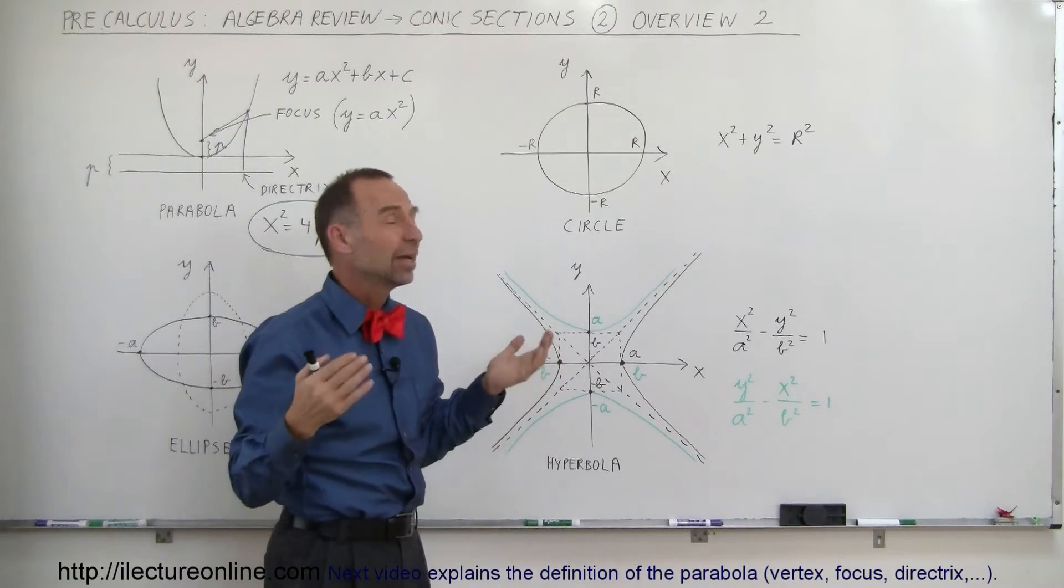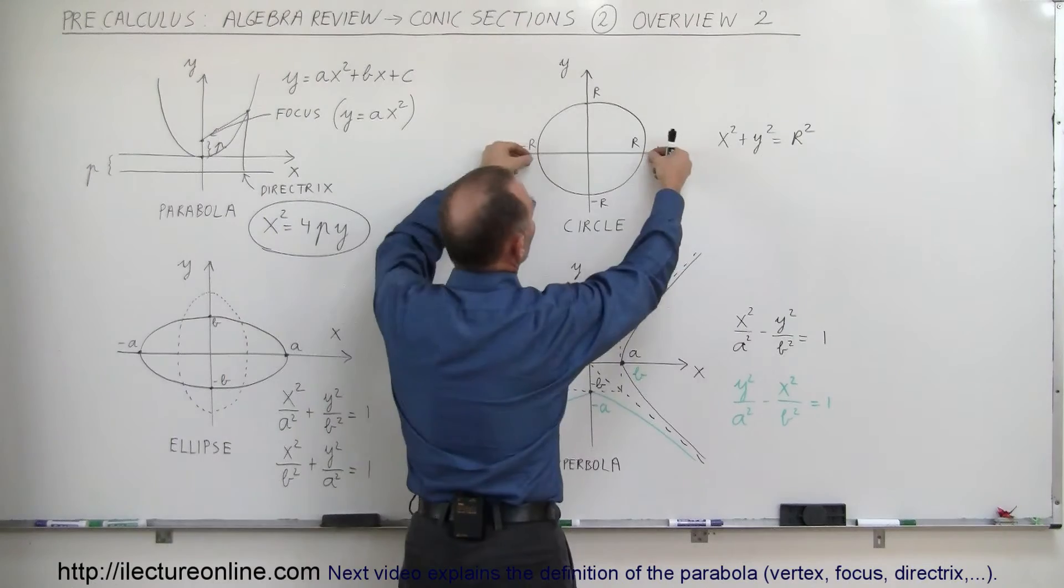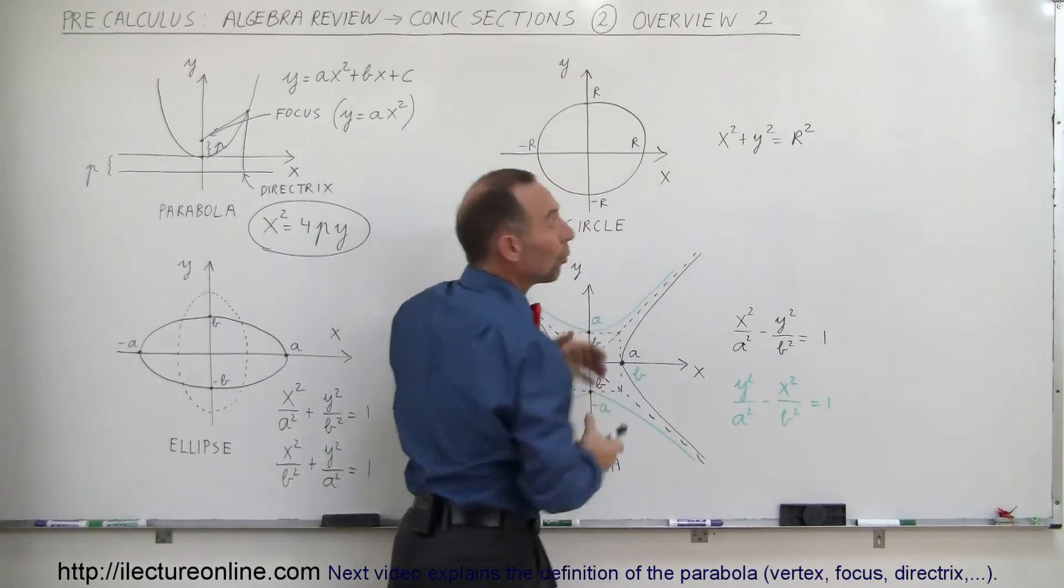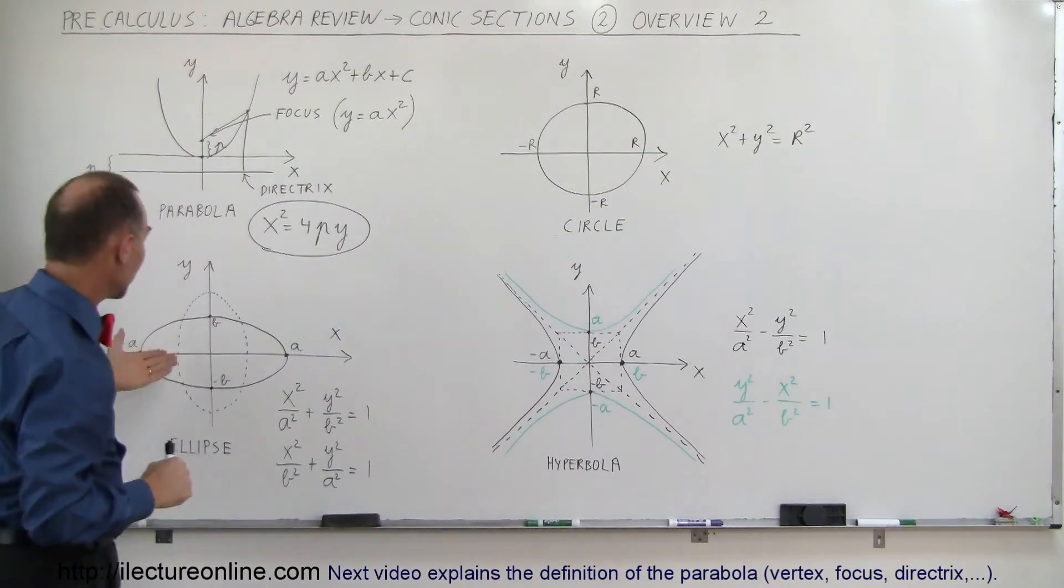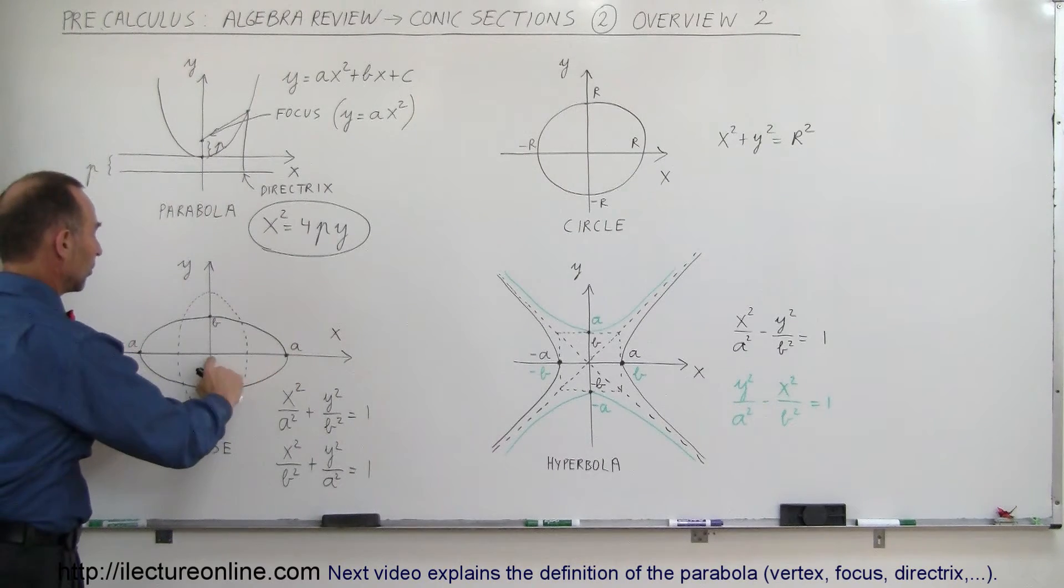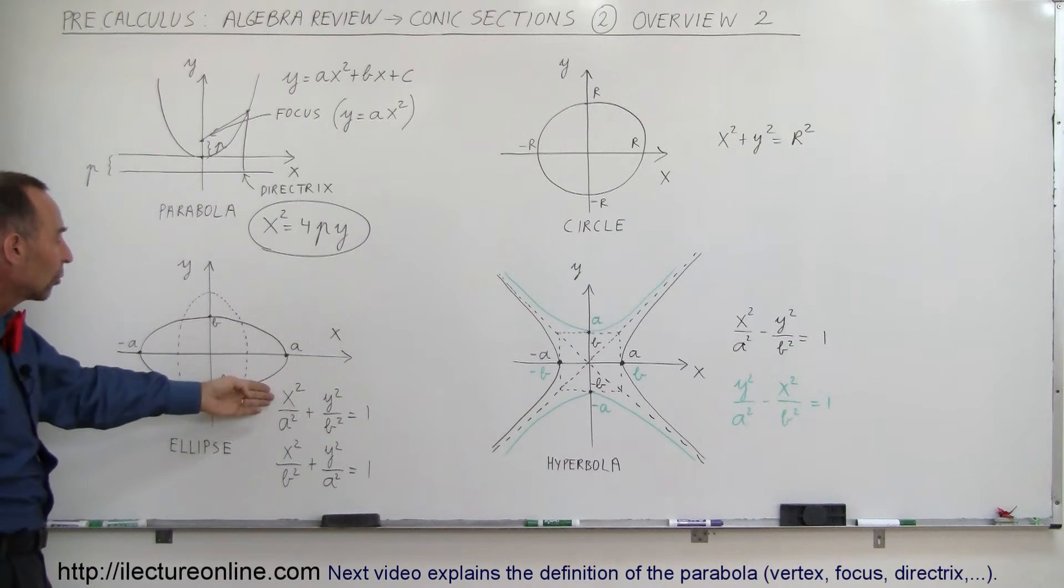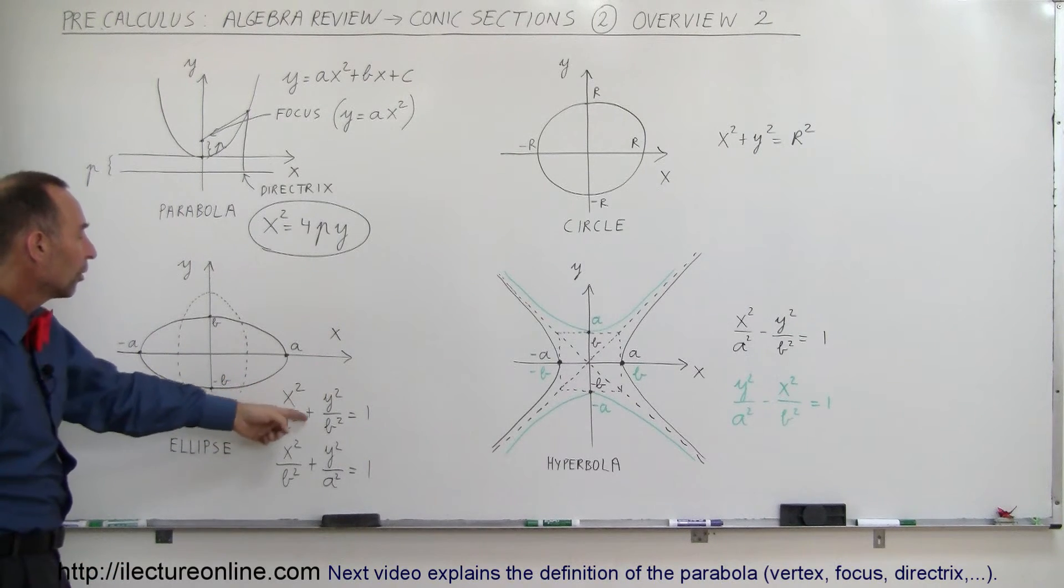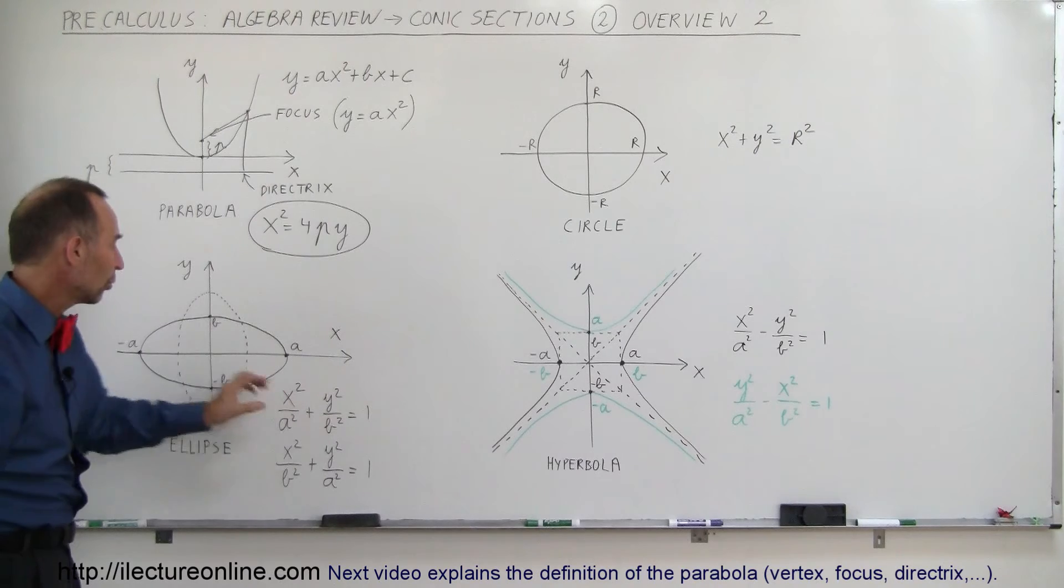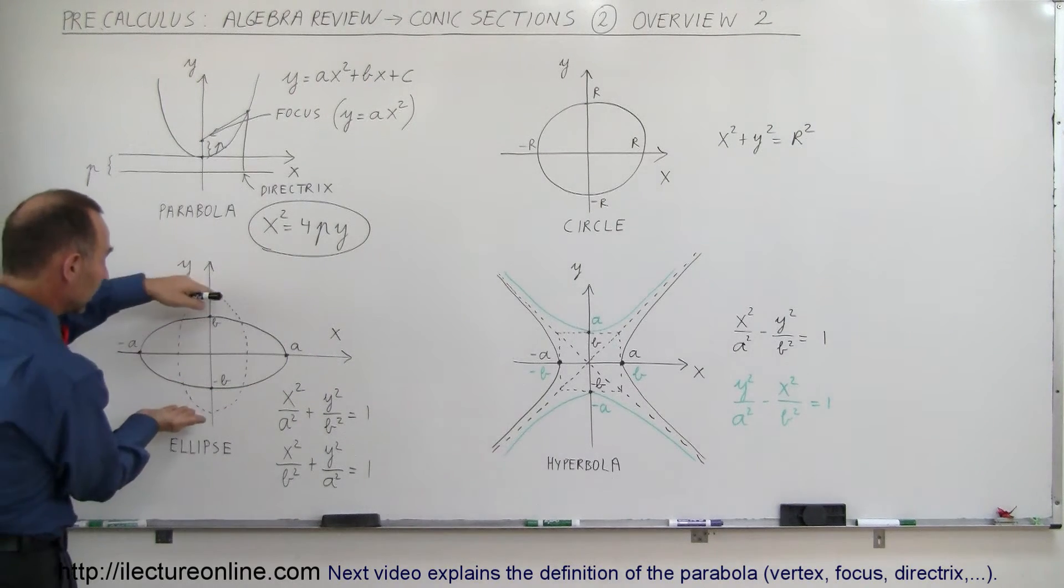If we now stretch the circle, either in this direction or in this direction, we end up with an ellipse. So here we have the ellipse, where we stretch it to the right. If the distance from the center to there is a, then you can see that x squared divided by a squared plus y squared divided by b squared equals 1, with b being the distance from the center to the vertical extremes.